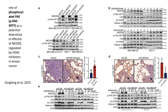This slide investigates the role of phosphorylated FAK (pFAK Y397) as a potential downstream effector of NET9 regulated by HDAC inhibitors in breast cancer cells. Understanding how FAK phosphorylation is linked to NET9 and HDAC inhibitors can reveal mechanisms driving breast cancer metastasis and potential therapeutic targets. Panel A shows the relationship between NET9 expression and pFAK Y397 levels: knockdown of NET9 leads to decreased FAK phosphorylation, while overexpression of NET9 results in elevated FAK phosphorylation, establishing NET9 as a critical regulator of FAK activity.